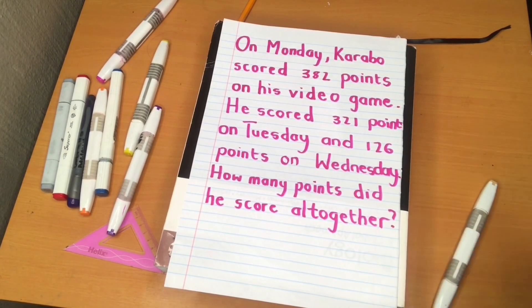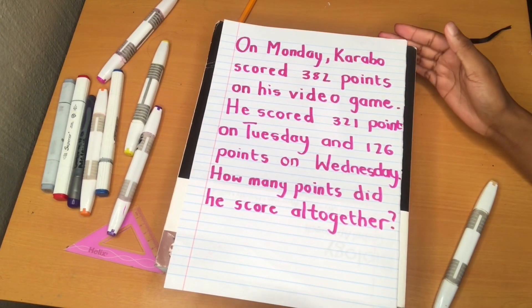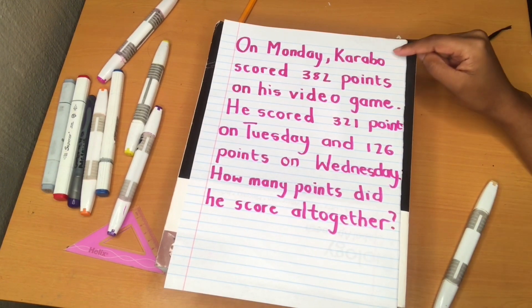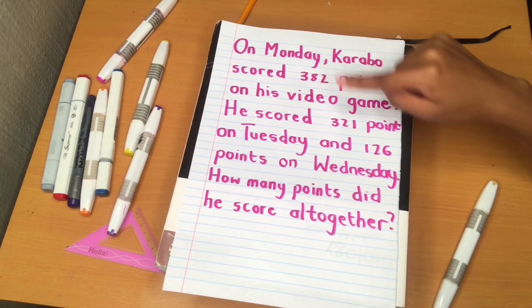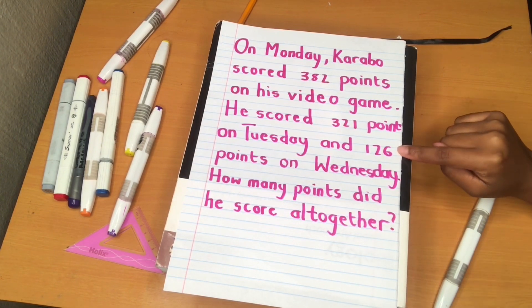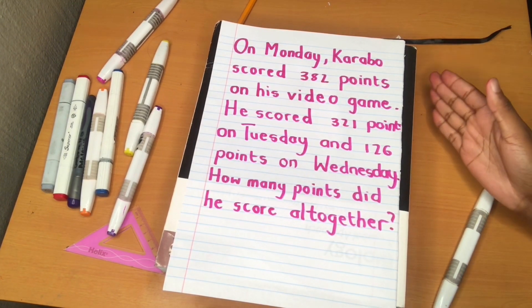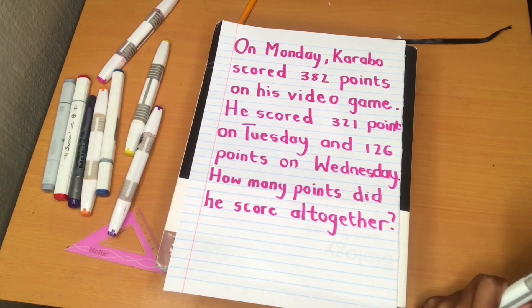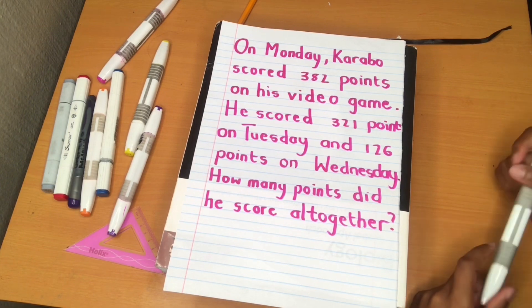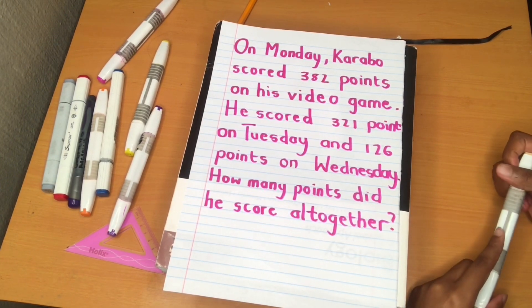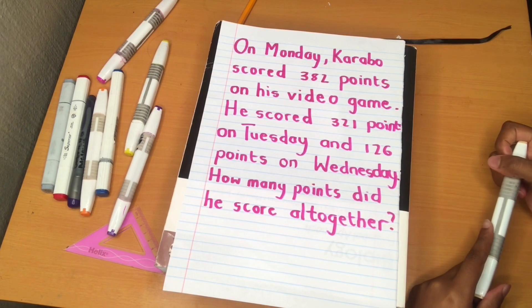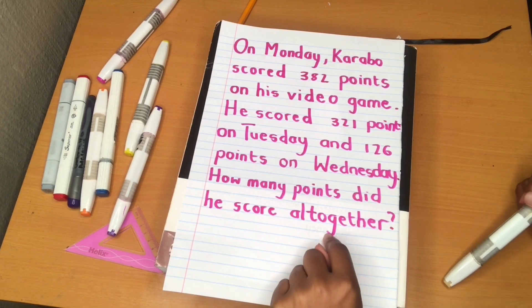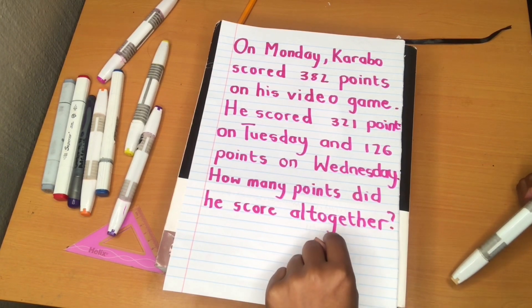How many points did he score all together? This word problem is like any other we've been working on — the only difference is that we are now working with three-digit numbers. Before we start, we need to figure out what kind of word problem this is. Our special word is 'all together,' which shows us that this is an addition word problem.